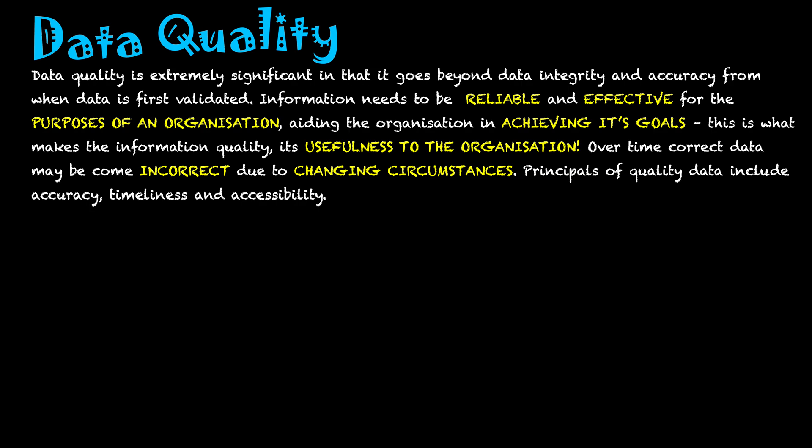Over time, correct data may become outdated due to changing circumstances. Just because we have information on our system doesn't mean it stays correct after it was first entered, so we need to put measures in place to ensure data stays quality. The principles of quality data include accuracy, timeliness, and accessibility.